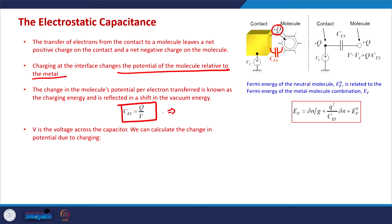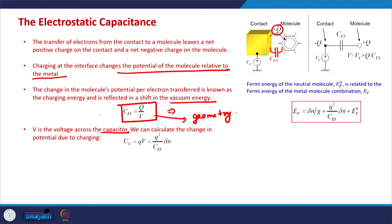This is modeled by the electrostatic capacitance, which also depends on the geometry and the spacing between the contact and the molecule. This change in charge on the molecule will change all the energy levels including the vacuum energy level. If V is the voltage across the capacitor — the change in the electrostatic potential due to charge transfer — the electrostatic capacitance is defined as δQ / δV: the change in charge on the molecule divided by the change in electrostatic potential across the molecule.